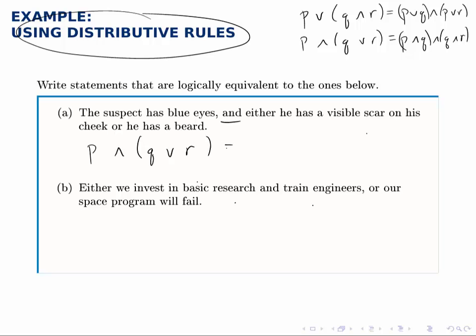Using the distributive rule, we can distribute this AND across the OR. So we get P and Q, or P and R.